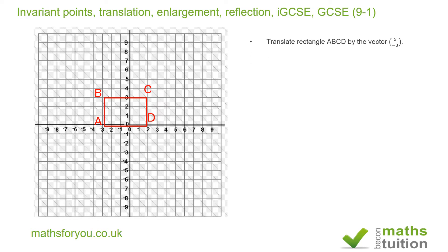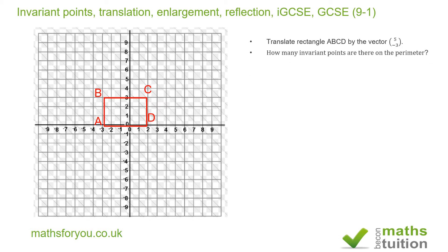The first question says: translate rectangle ABCD by the vector (5, -3). How many invariant points are there on the perimeter after this translation? In other words, after translation, which of these four points retain the same coordinates?